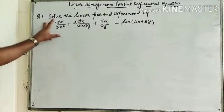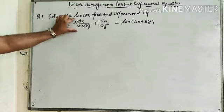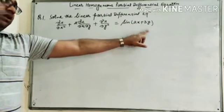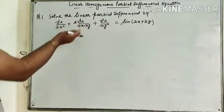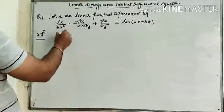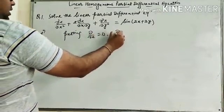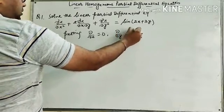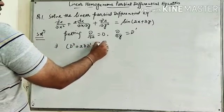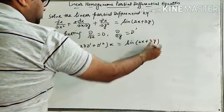This is the first question: Solve the linear partial differential equation ∂²z/∂x² + 2·∂²z/∂x∂y + ∂²z/∂y² = sin(2x + 3y). For the solution, first we calculate the complementary function. We put ∂/∂x = D and ∂/∂y = D', giving us D²z + 2DD'z + D'²z = sin(2x + 3y).